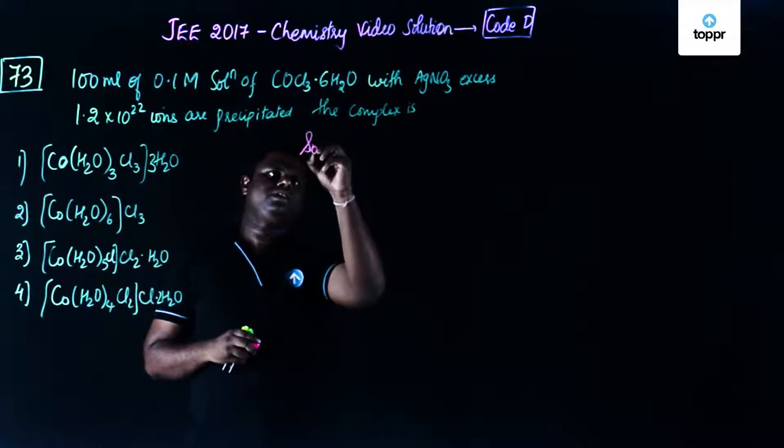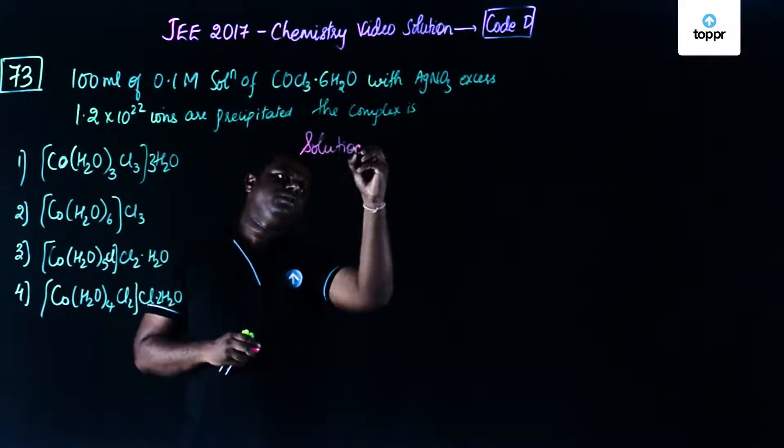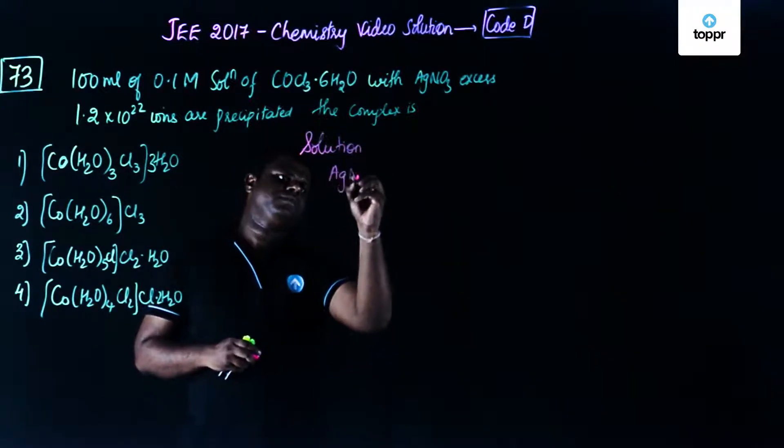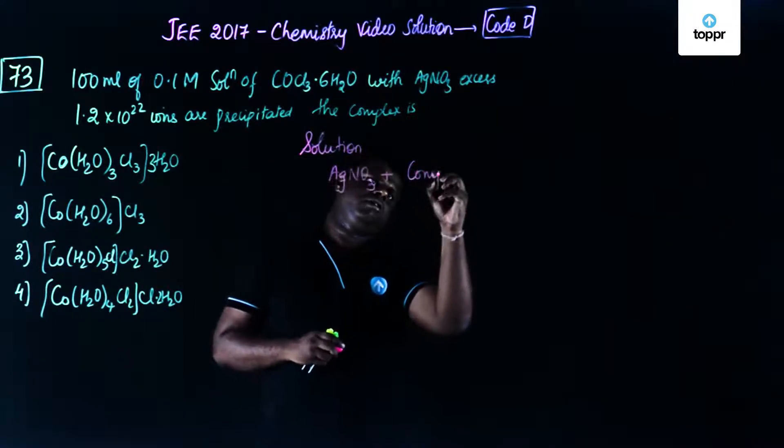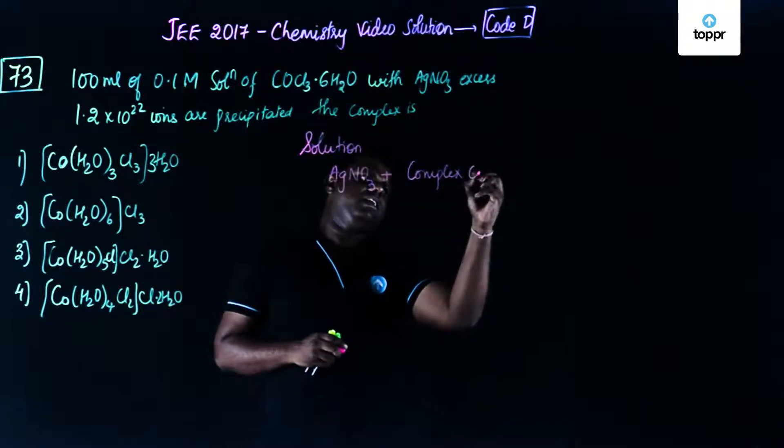So let's first write down the equation, let's begin with the solution. So you have AgNO3 plus let's say a complex, complex containing Cl, correct? So I'll just put this in a different bracket so that I'm able to distinguish this